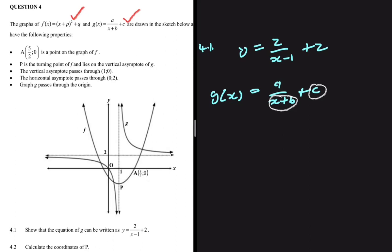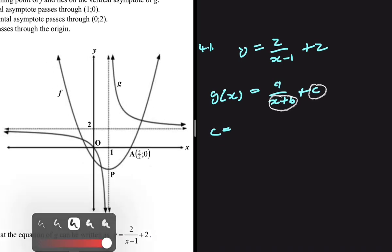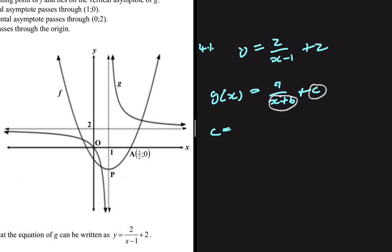Let's go ahead and find the value of c, because we are given the horizontal asymptote. The horizontal asymptote is right here at y equals 2. So that means the value of c in our function g of x is equal to 2.